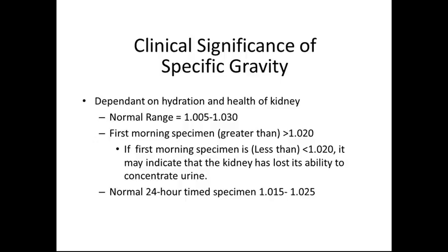The clinical significance of specific gravity is dependent on hydration and the health of the kidney. Normal range is 1.005 to 1.030 — the higher the value, the more dehydrated the patient may be; the lower the value, the more hydrated and the better the kidneys are working. A first morning specimen greater than 1.020 is common, since we are not drinking much through the night. If the first morning specimen is less than 1.020, it may indicate the kidney has lost its ability to concentrate urine. Normal 24-hour timed specimens usually fall in the range of 1.015 to 1.025.